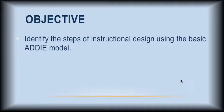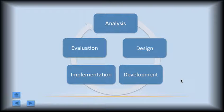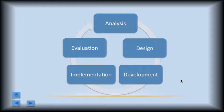Our objective is to identify the steps of the instructional design model using our basic model or umbrella model called ADDIE. ADDIE involves five basic steps: analysis, design, development, implementation, and evaluation. We typically look at these, as MD Roibler states in her textbook on instructional design, in three phases. The first phase is analysis, the second involves design, development, and implementation, and the last phase is evaluation.